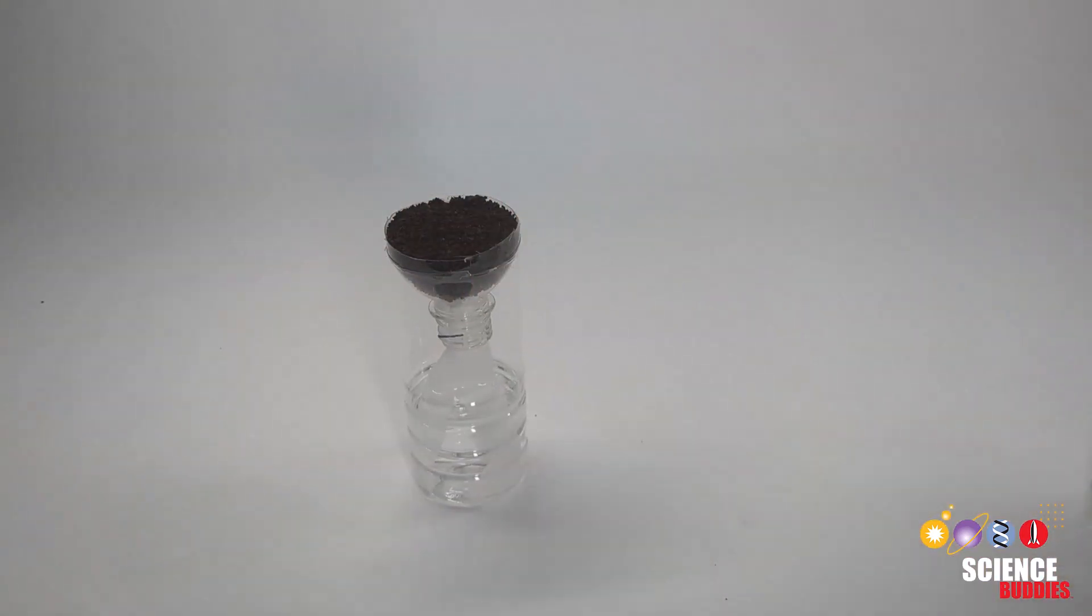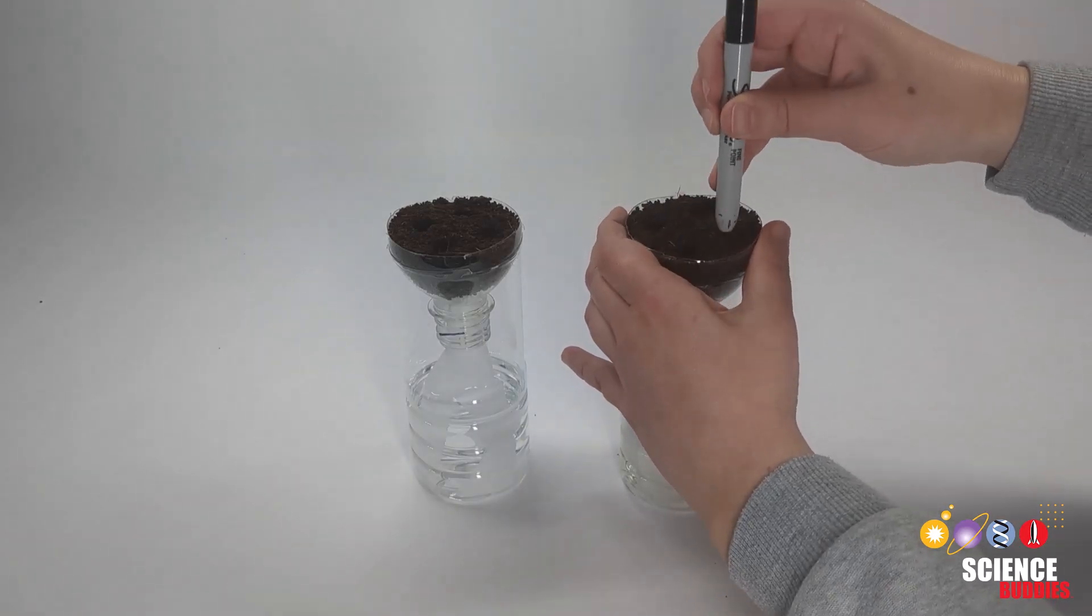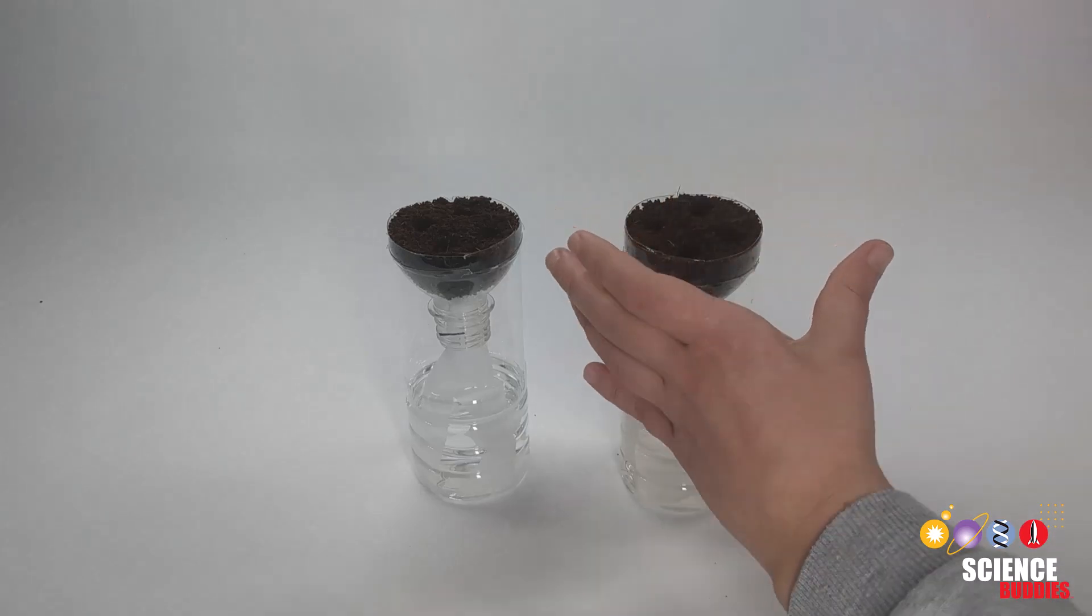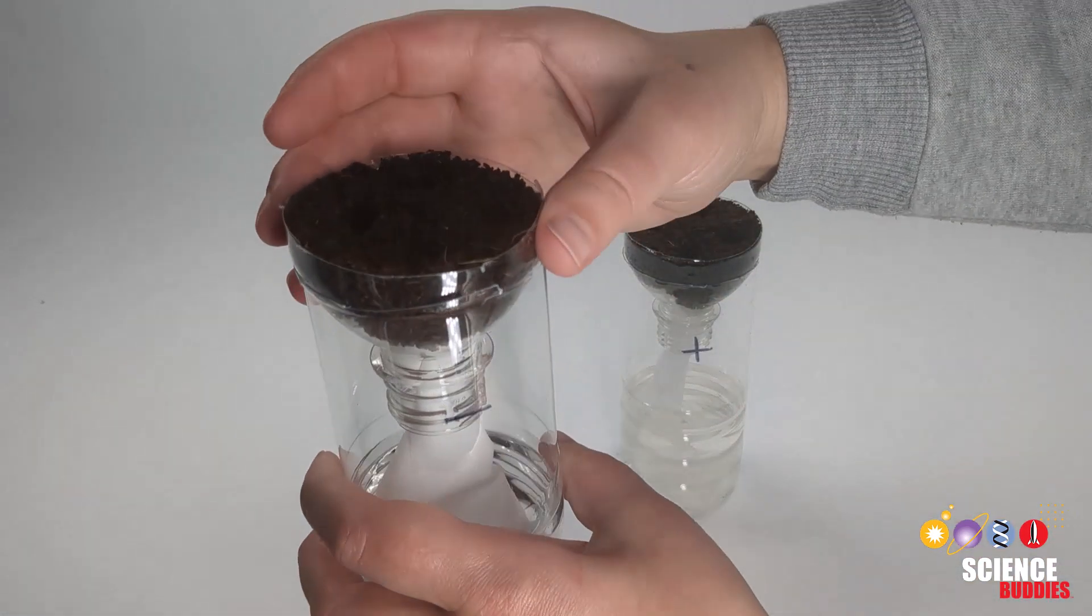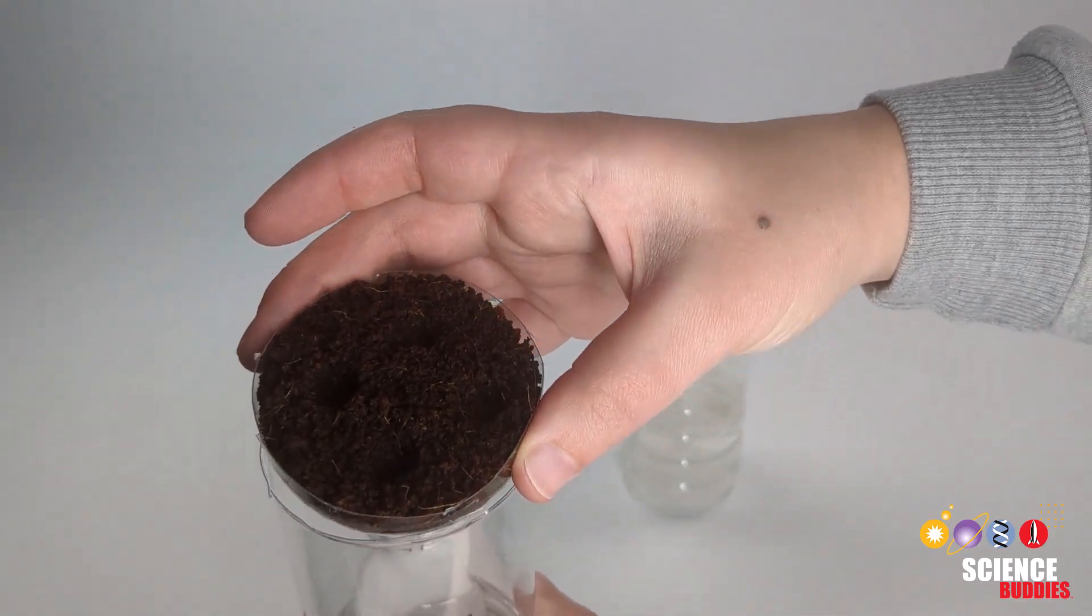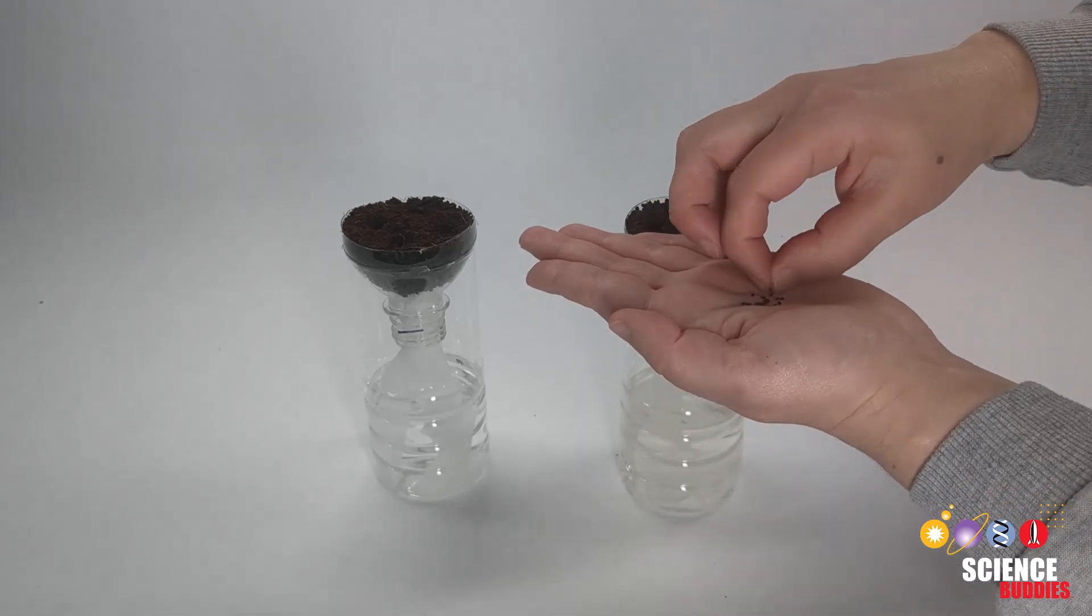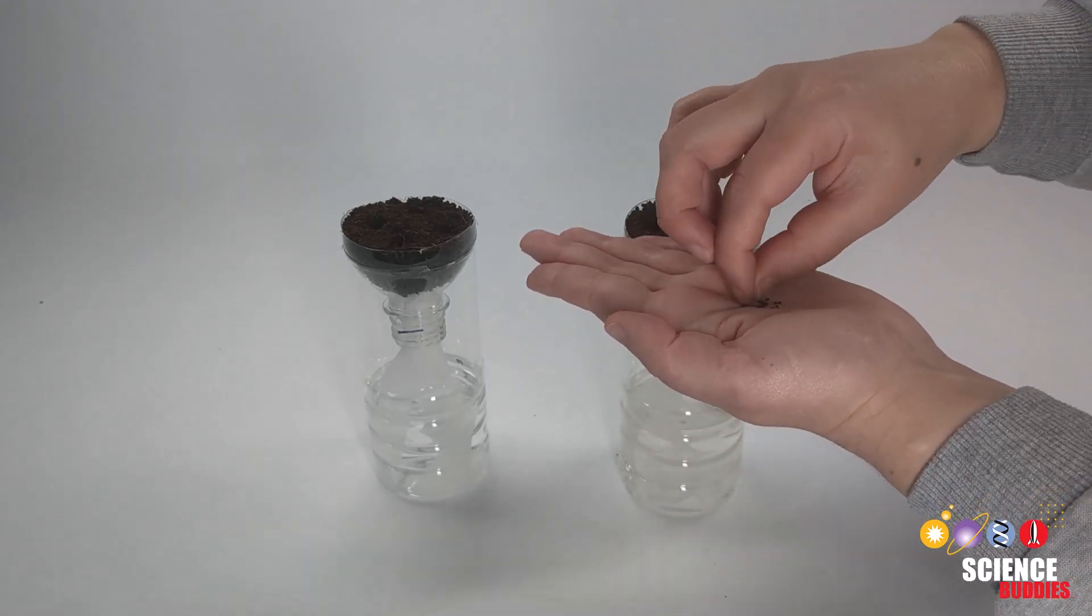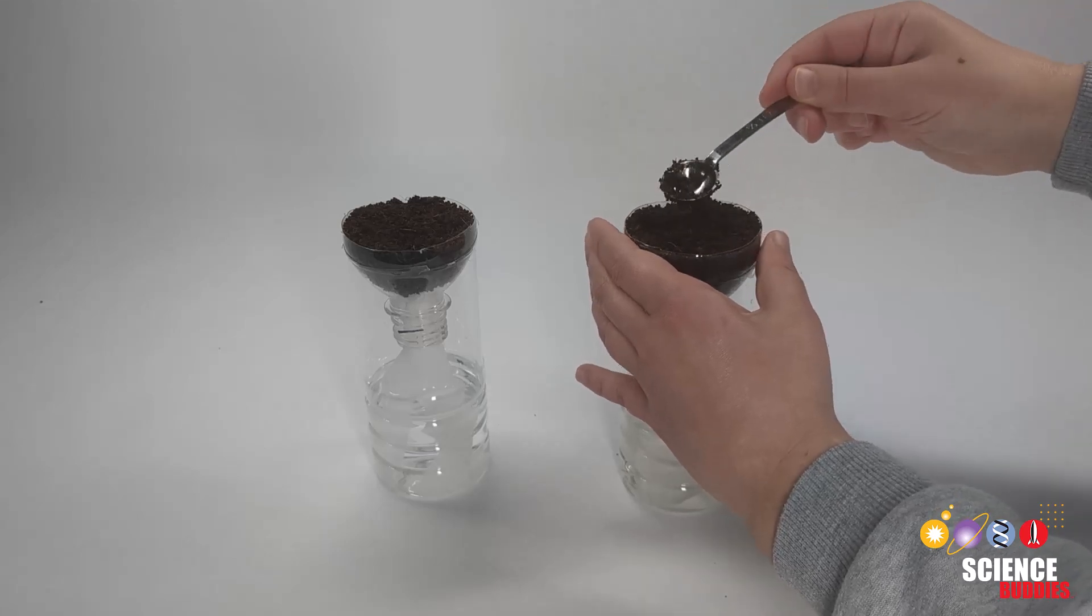Next you'll plant the seeds into the coconut core. Before you plant your seeds, use the end of your permanent marker or pen to make a small indent about one eighth of an inch deep to the top of the rehydrated coconut core in each hydroponic container. Then carefully drop one seed into each indentation and cover it with excess coconut core.